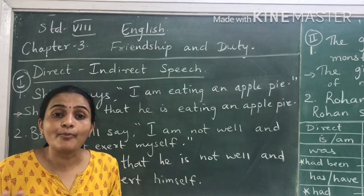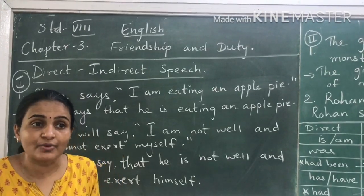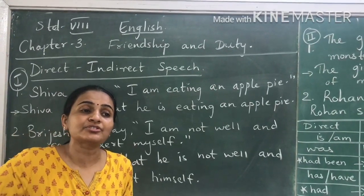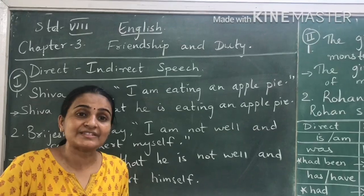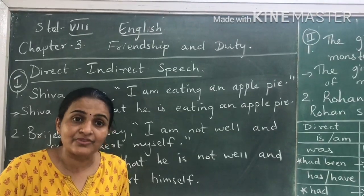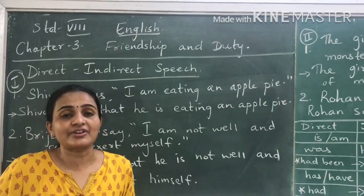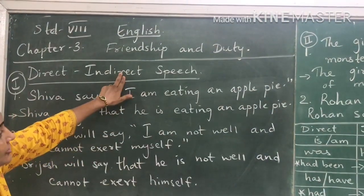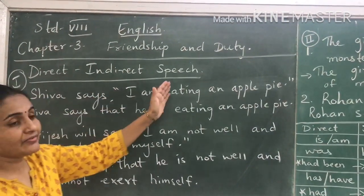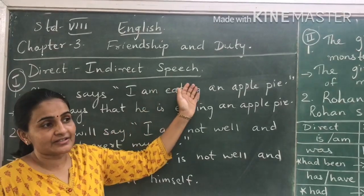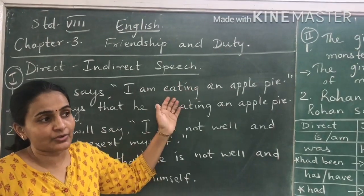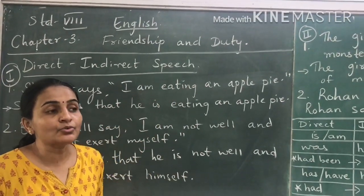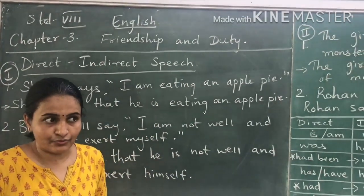And that becomes reported speech. Why? Because you are reporting it to someone else. You are saying the same thing to someone else. So that is indirect speech. Now when we change sentences from direct to indirect, there are certain rules that we have to follow.